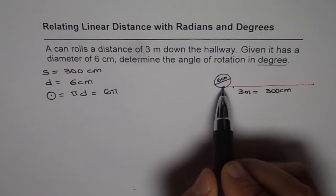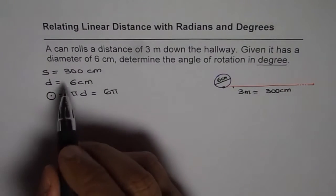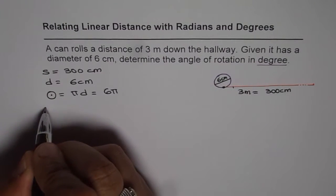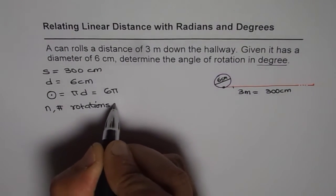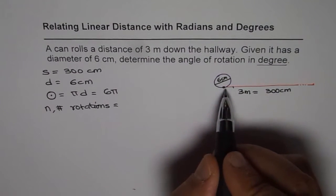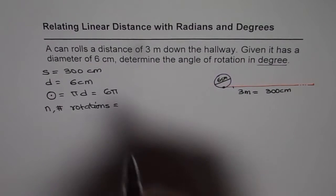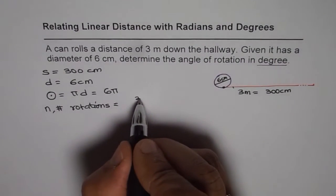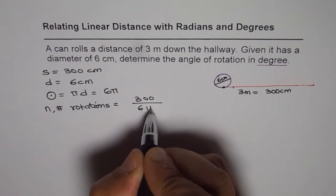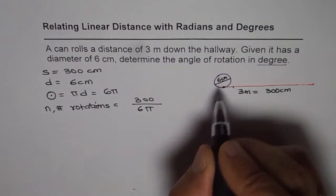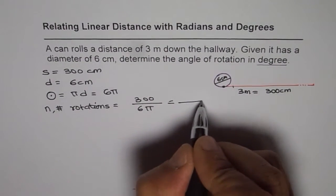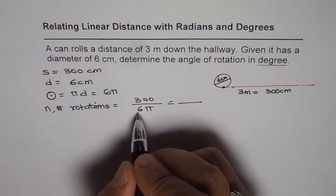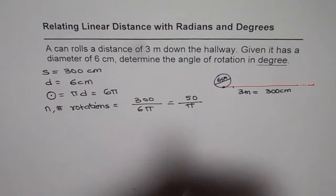If the can rolls 300 centimeters, how many rotations are there? Let n be the number of rotations. We divide the total distance by the distance per rotation: n = 300 ÷ 6π. Simplifying, 300 divided by 6 gives 50, so n = 50/π rotations. That is the exact answer.